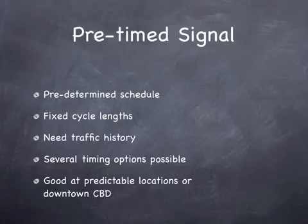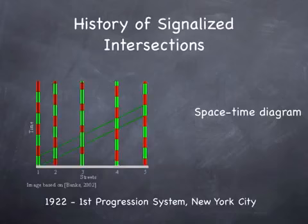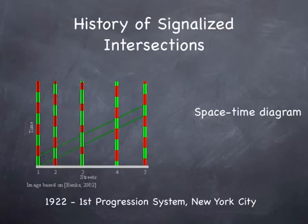If you could change it by time of day, you could have a pre-timed plan for rush hour, a plan for morning off-peak, a plan for the midday, a plan for the afternoon off-peak, a plan for the afternoon peak, a plan for the evening, and a plan for overnight. If you're in a downtown location or someplace that's very predictable, this works well enough — it's simple and can be coordinated.